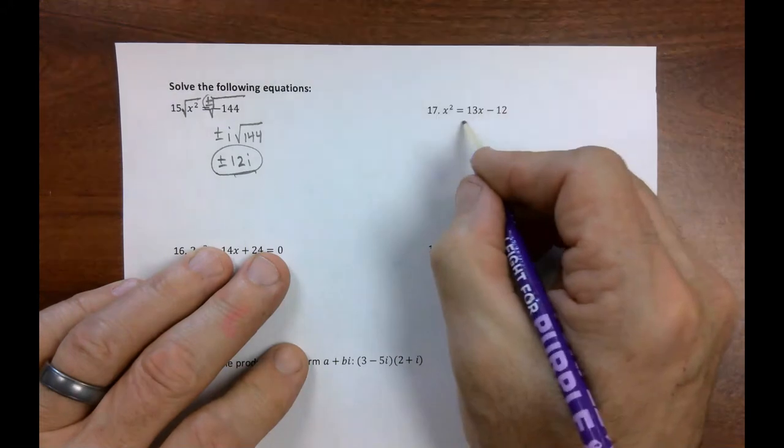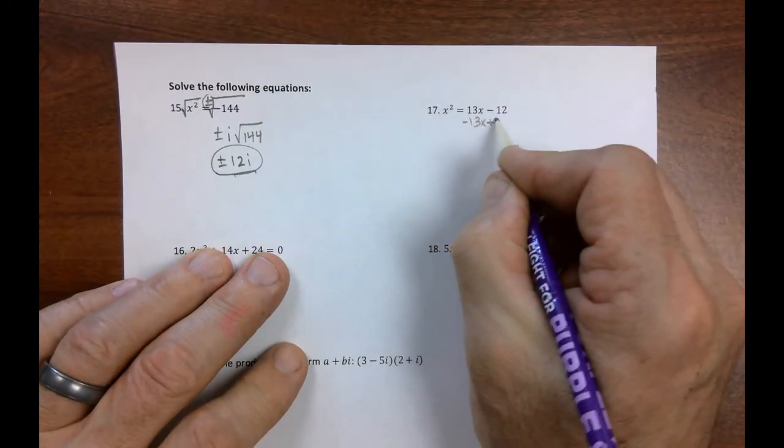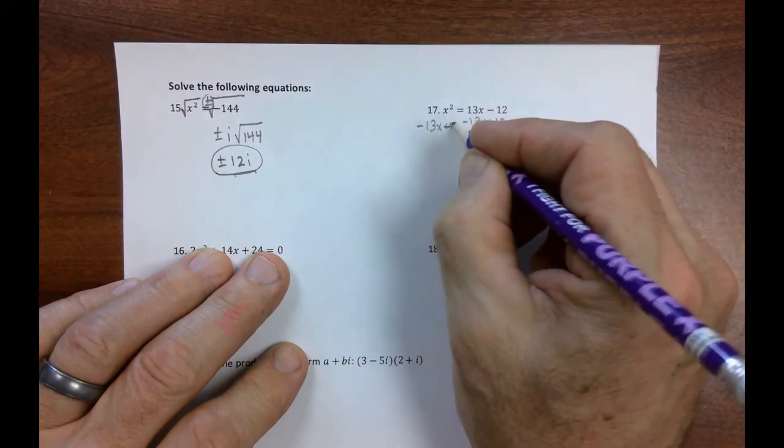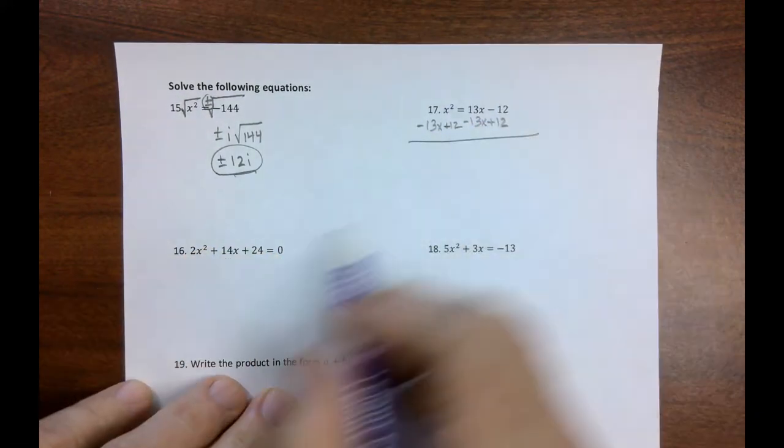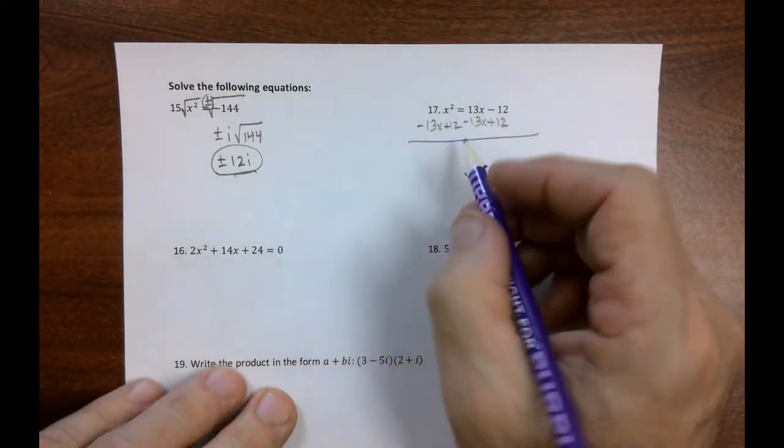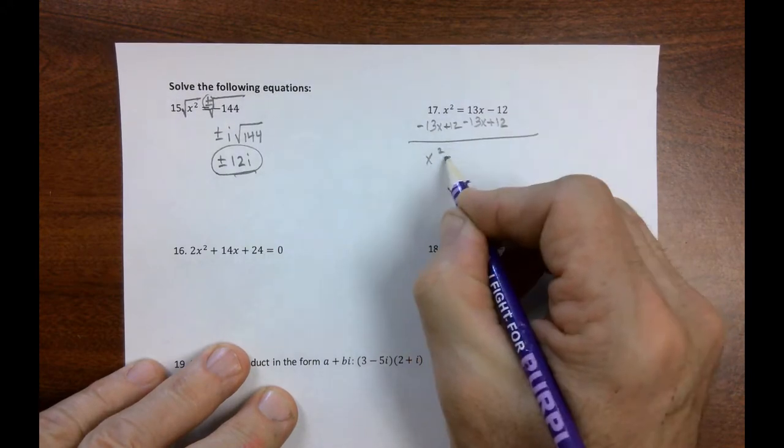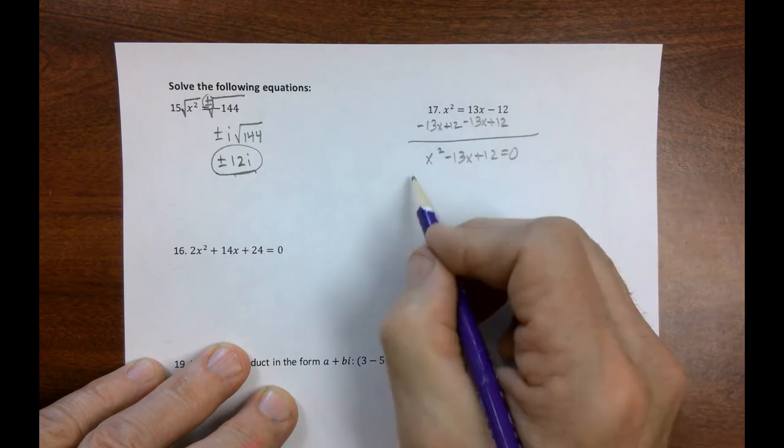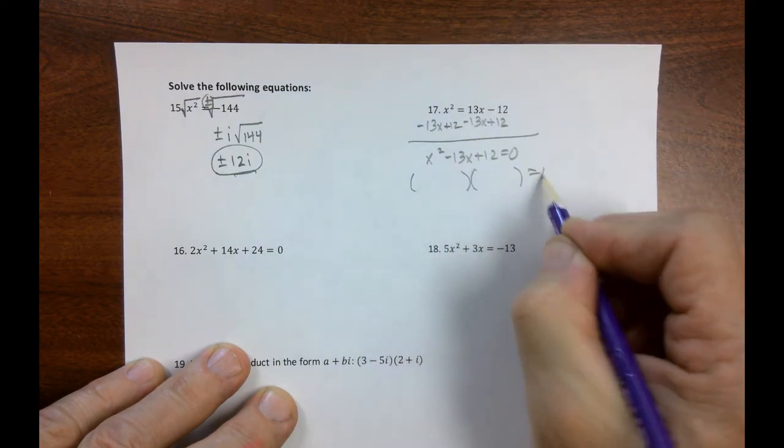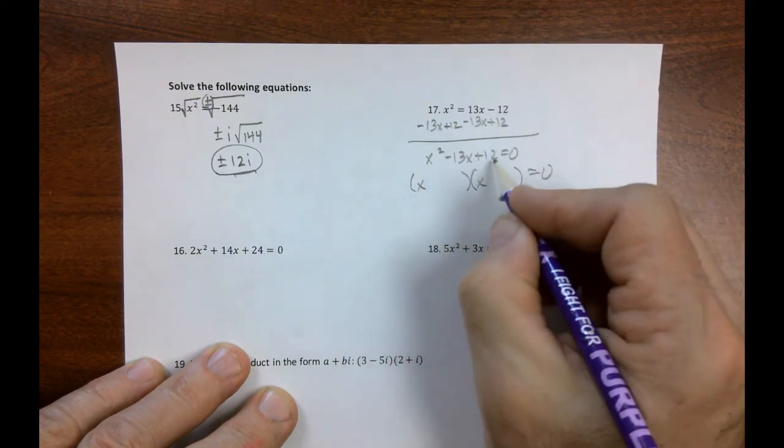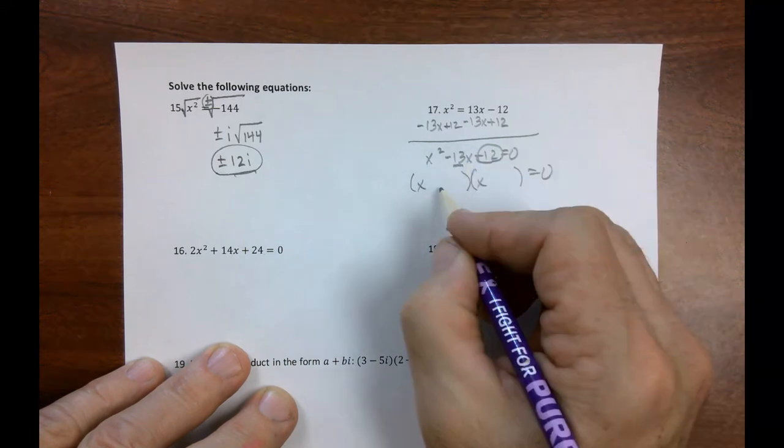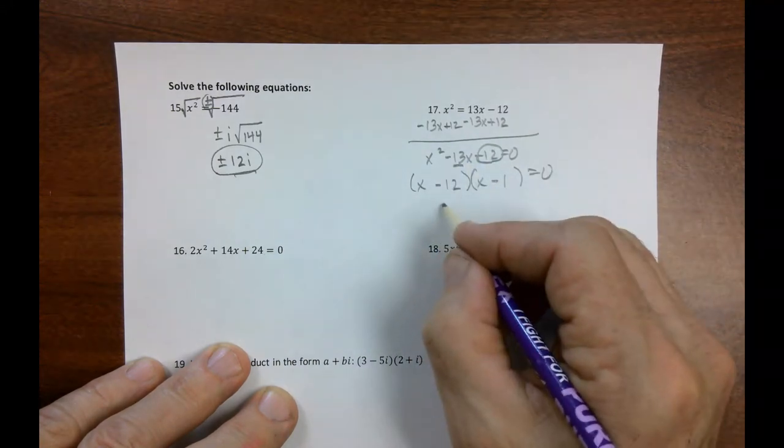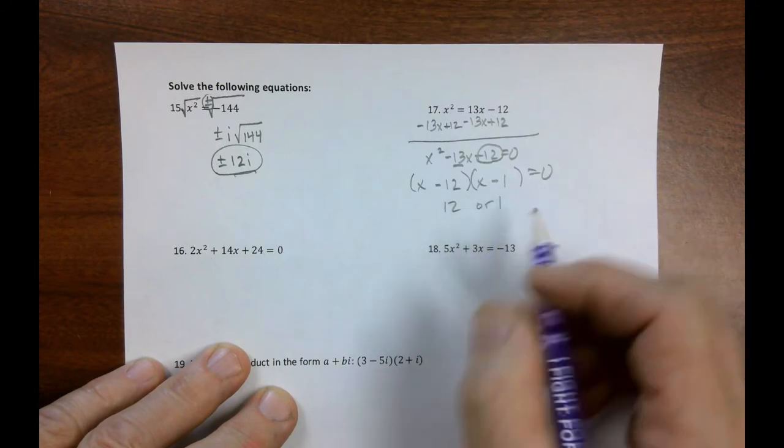Solve this. Well, we want to turn this into a trinomial by setting everything equal to 0. Oh, I skipped 16. We'll get to that. So, x squared minus 13x plus 12 is 0. We're like, wait a minute. Let's try to factor this thing. So, x and x. Two factors of 12 that add up to negative 13. And they actually exist. So, I go, ah, x is 12 or 1. Done.